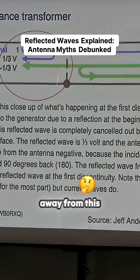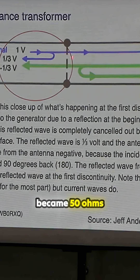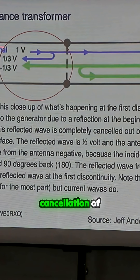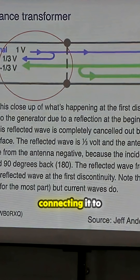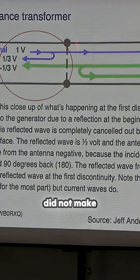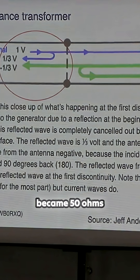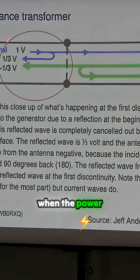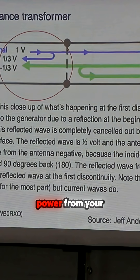If you take one thing away from this presentation, this is it. This transformer became 50 ohms because of the cancellation of these two waves. Just putting it out there — connecting it to your antenna did not make that endpoint 50 ohms. That endpoint became 50 ohms when the power from your transmitter, that reflected power from your transmitter, got canceled by the re-reflected power from your antenna.